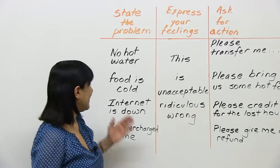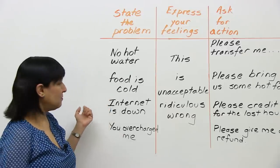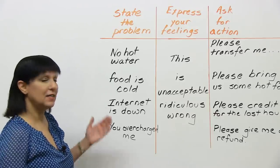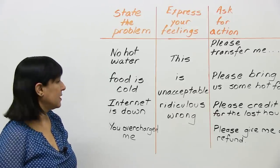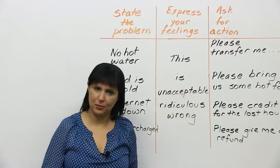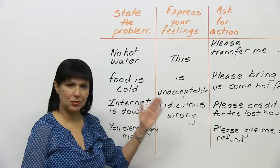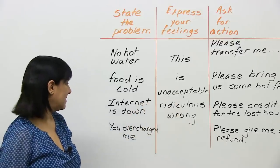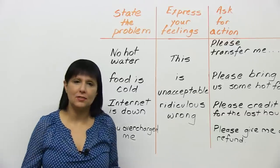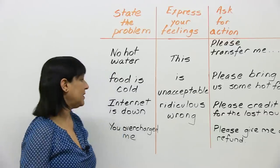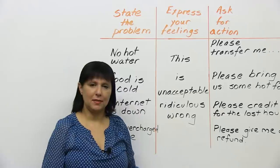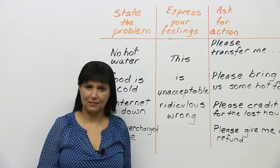You're in a restaurant and the food isn't to your satisfaction. So you say: the food is cold. This is ridiculous. Please bring us some hot food. Next, the internet is down — meaning the internet's not working. This is unacceptable. Please credit me for the lost hours.